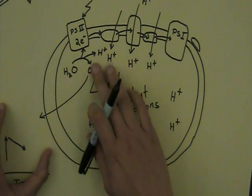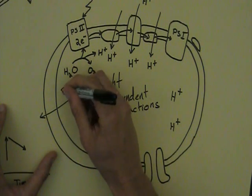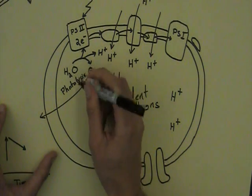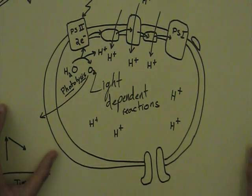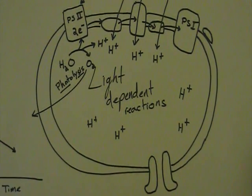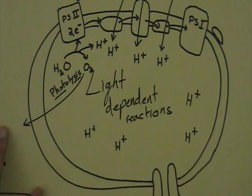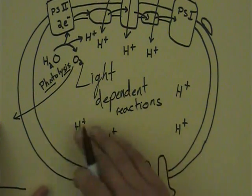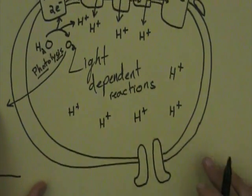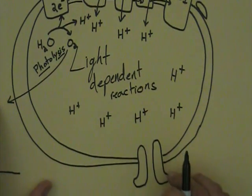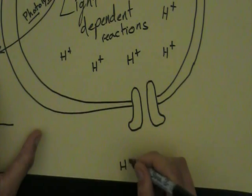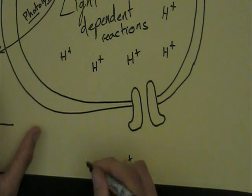So the splitting of water has a special name, it is called photolysis. Remember that photo means light, and lysis means split. We've already come across that before in the term hydrolysis. So all of this is building up a high concentration of hydrogen ions inside the thylakoid. And they're going to want to move out of this space from a high to a low concentration. And there is a significantly lower concentration of hydrogen ions outside of the thylakoid in this space that we call the stroma.